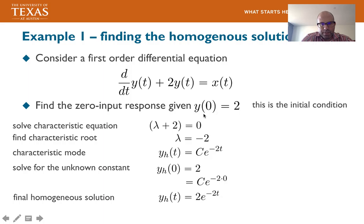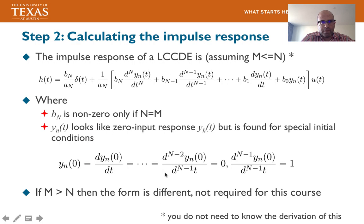Note that the initial condition y(0) = 2 is used to find the homogeneous solution. This makes sense because this is the zero-input response, so y(0) is also equal to yh(0). That's the homogeneous solution.